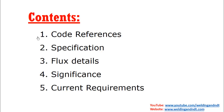The contents of this video are: first, the code reference — I will give you the code from which I have taken these materials. Then I will talk about the specification, for example electrodes like E6013 — what is the meaning of E, what is the meaning of 60, what is the meaning of 13. Then I will talk about the flux details, the significance and importance of the most common carbon steel welding electrodes, and finally the current requirements for different electrodes.